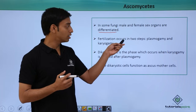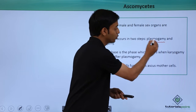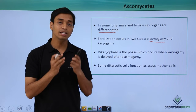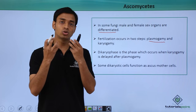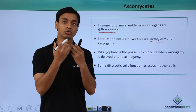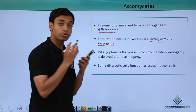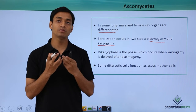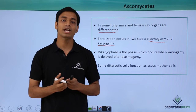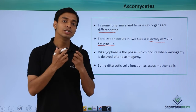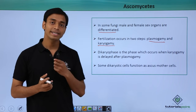Fertilization occurs in two steps. The first step is plasmogamy, in which the cytoplasm of two cells fuses. This is followed by karyogamy, which means the fusion of the nuclei — so first cytoplasmic fusion happens, after which the nuclear or genetic material fusion occurs.